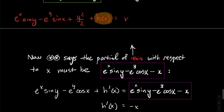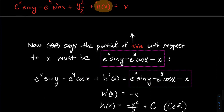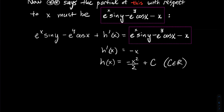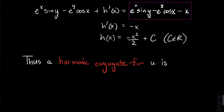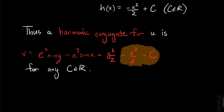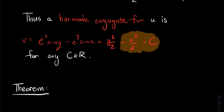So to track what we did: I had no idea what h looks like before, just knew I was off by some function of x. Now I know h is minus x²/2 plus a constant. To put it all together, a harmonic conjugate for U could be any function of the form e^x sin(y) minus e^y sin(x) + y²/2 minus x²/2 plus some constant C. Any constant C will work, so there are lots of harmonic conjugates.